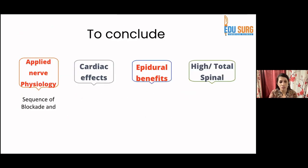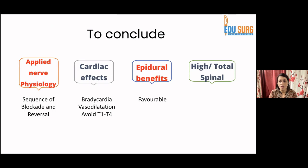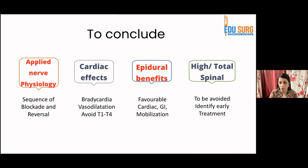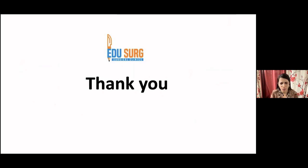In summary: in applied nerve physiology, we saw the sequence of blockage and reversal. In cardiac effects, we covered bradycardia, its causes, and the importance of avoiding blocks above T1–T4 to prevent blockade of cardioaccelerator fibers. Epidural benefits are favorable for cardiac function, GI recovery, and early patient mobilization, reducing patient morbidity and mortality. High and total spinal must be avoided, but if they occur, identified early and treated accordingly. This talk is part of EduSearch Surgical Clinics — if you have questions, write in the comment section, and subscribe to EduSearch Clinics for many interesting topics for both medical and non-medical professionals.